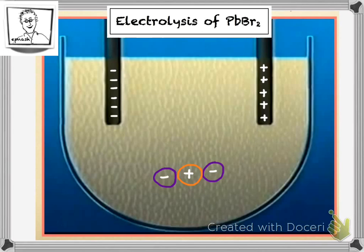But they can't do that in solid lead bromide because there's no way for the electrons to flow from one end to the other. In order to get things moving, you need to heat up the lead bromide and turn it into a liquid state.